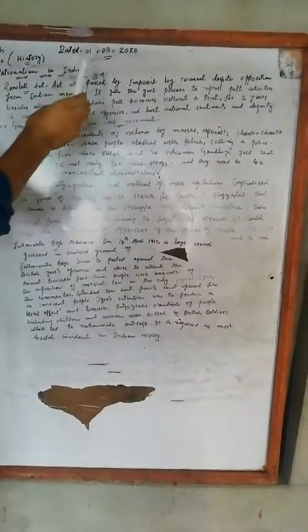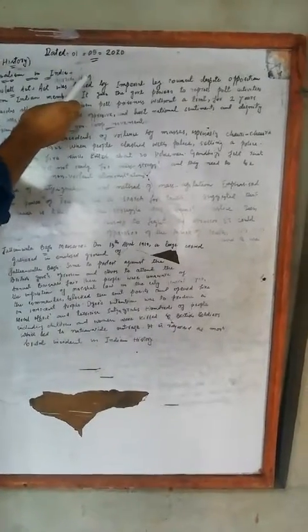The Class 10 Social Science topic is Nationalism in India. In March 1919, the Rowlatt Act was passed by the British Imperial Legislative Council, despite opposition from Indian members.